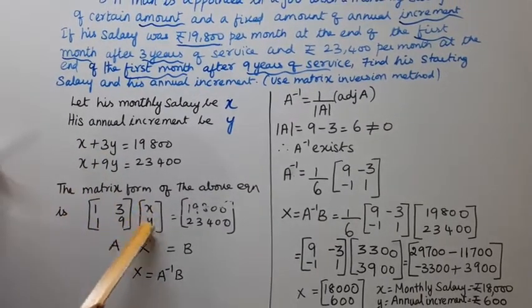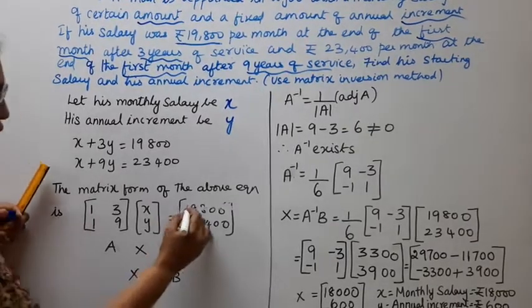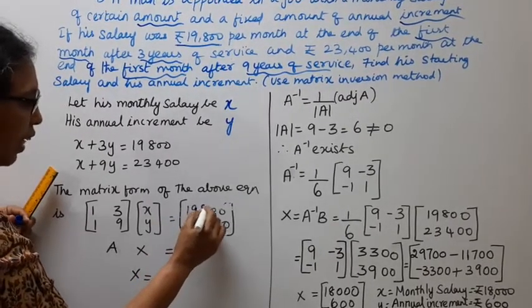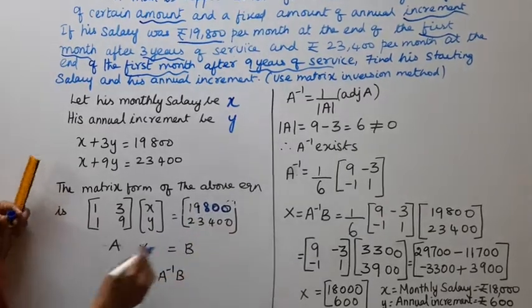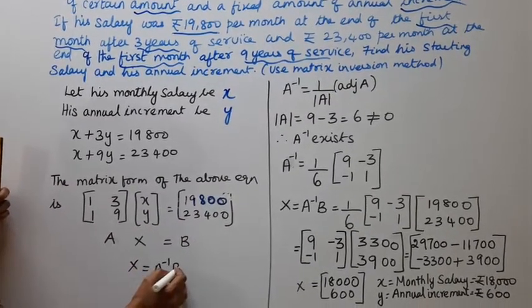One three, one nine, times X, Y equals 19,800, 23,400. This is AX equals B, so X equals A inverse times B.